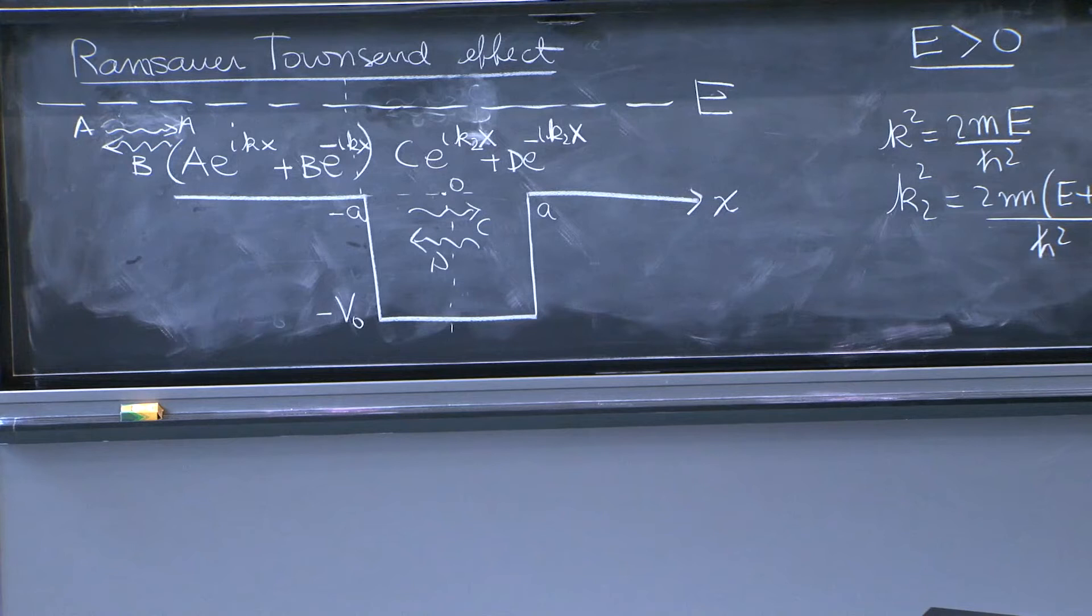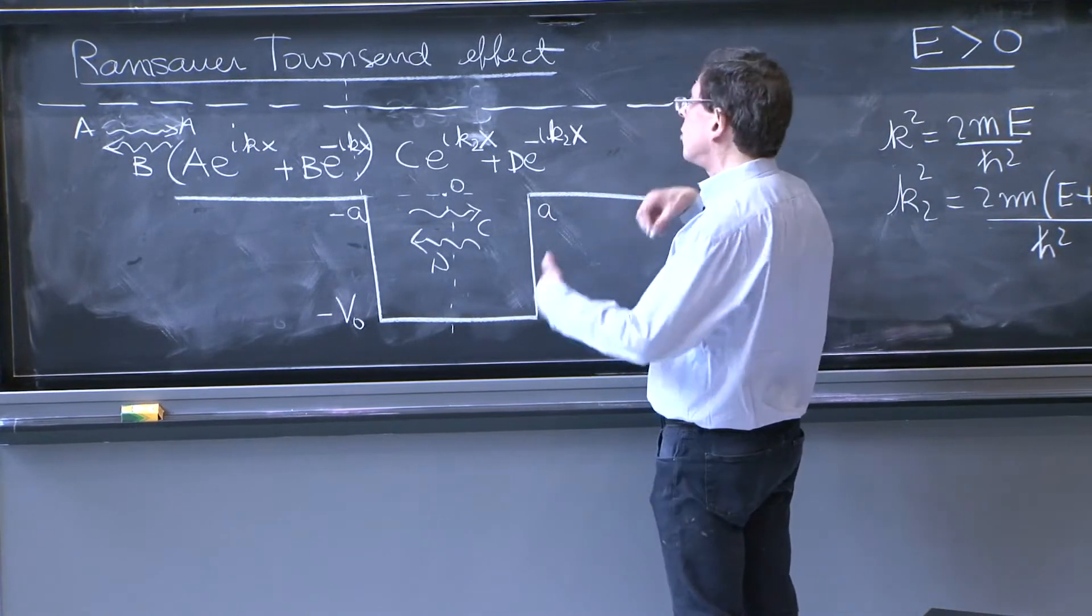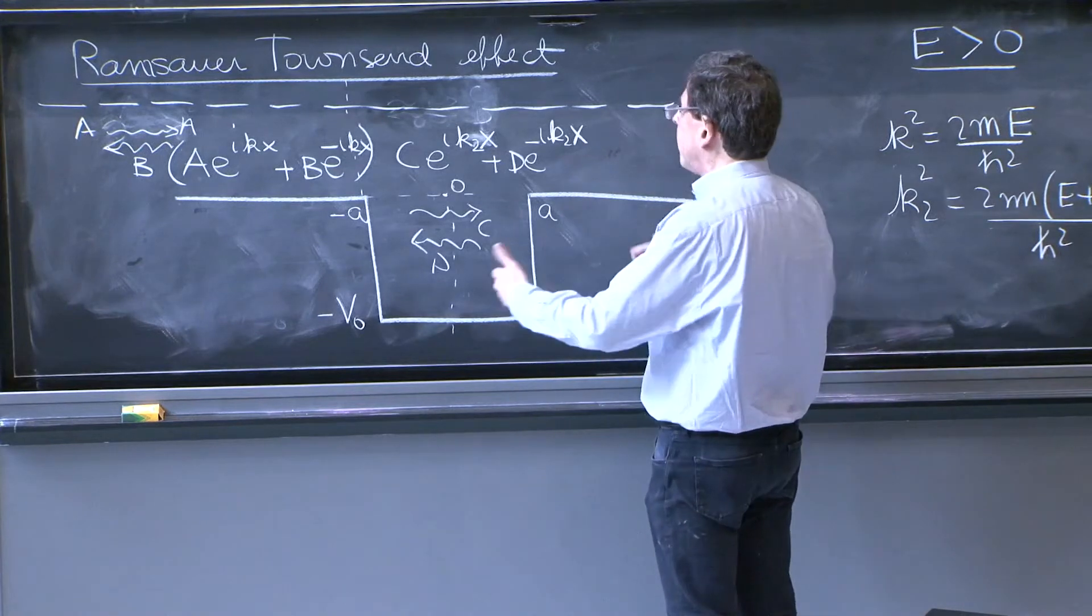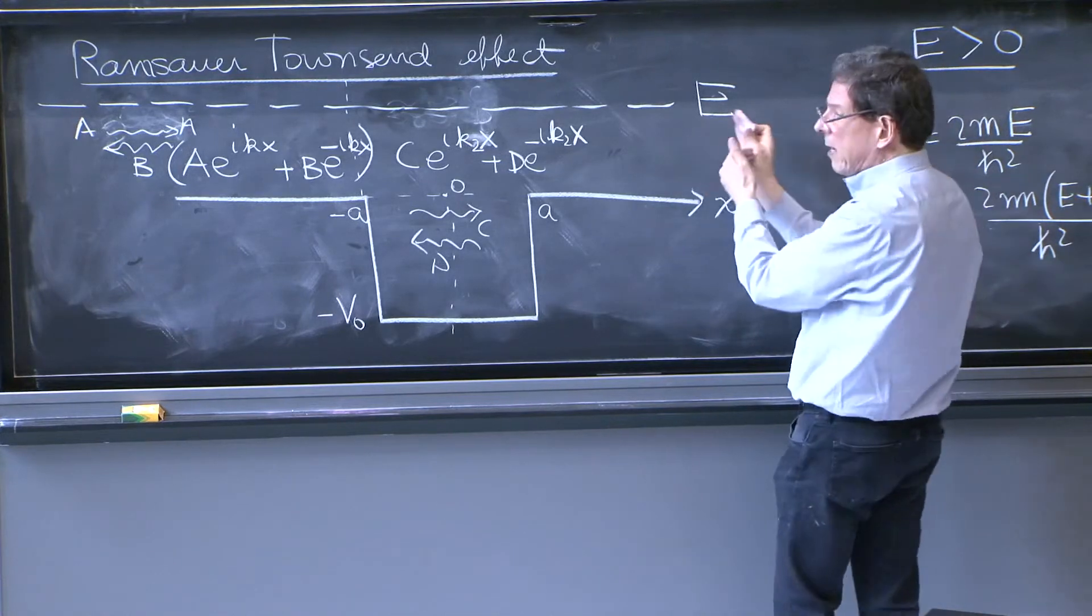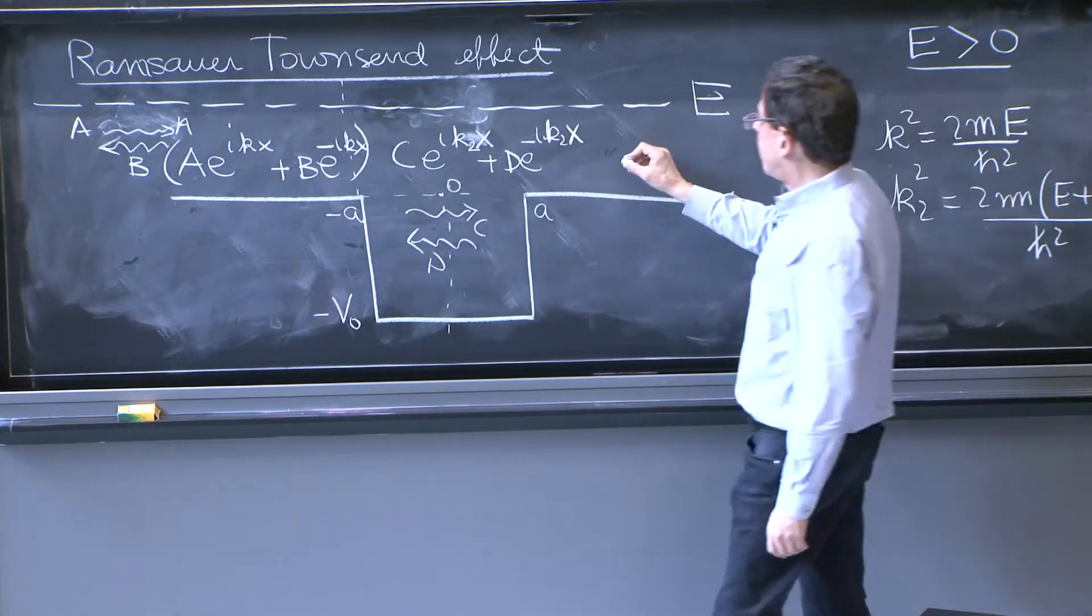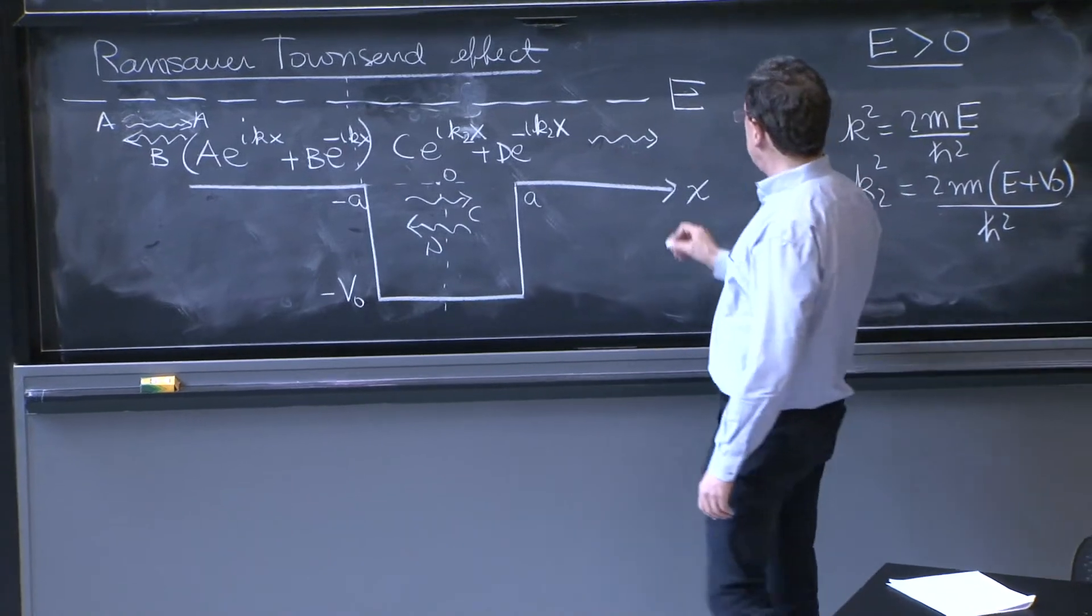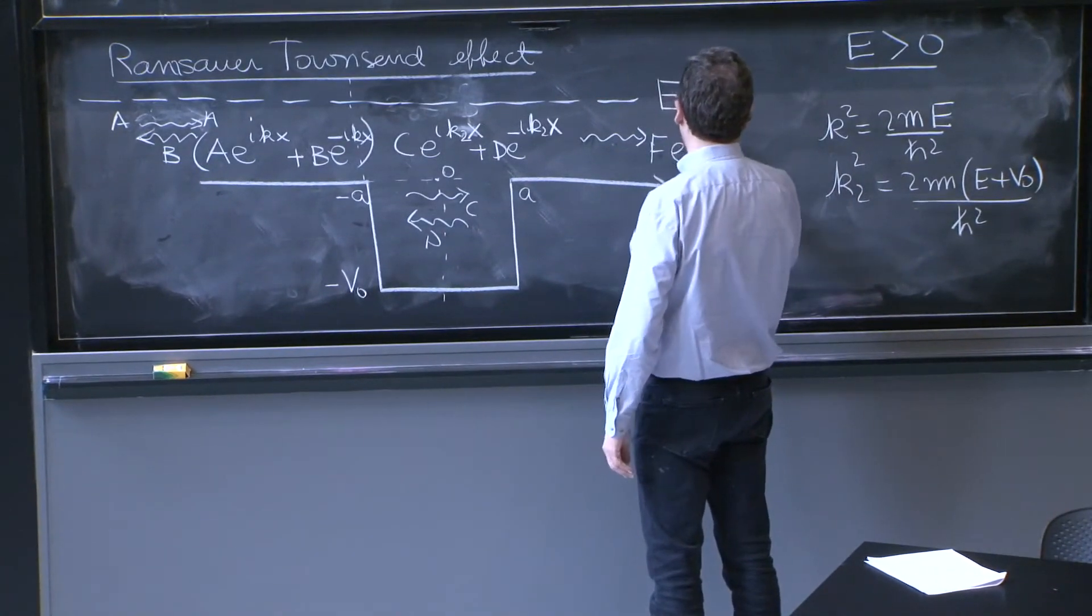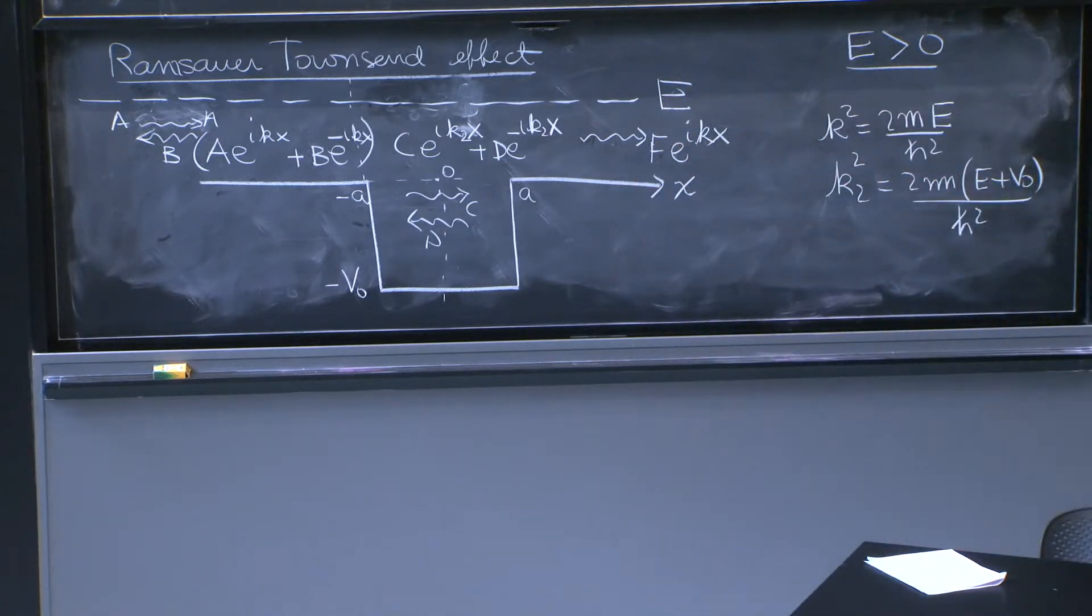And finally, to the right of the potential square well, there will be just one wave. Because intuitively, we should be able to interpret this as some wave that goes through, but has nothing to make it bounce or reflect. So we try to get the solution, which will have just some wave going in this direction. And it's called f e to the i kx. And I can go back to the label k, because you have the same energy available as kinetic energy as you had to the left of the barrier.